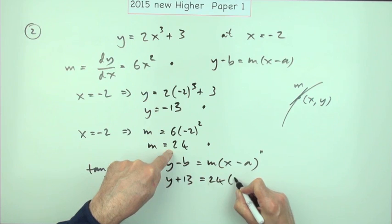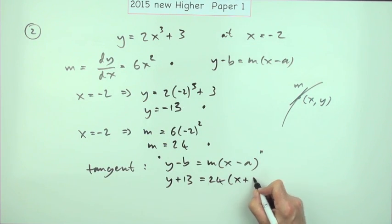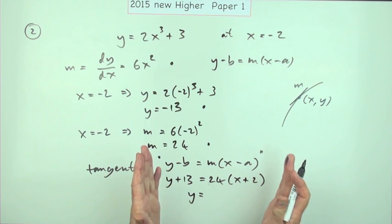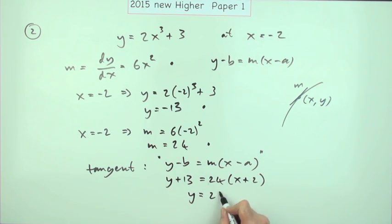Tidy that up. In the marking scheme it actually has it in the tidied up form. That'll be 24x plus 48, but minus 13 makes plus 35. There's the last mark.